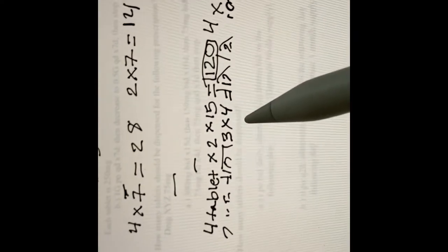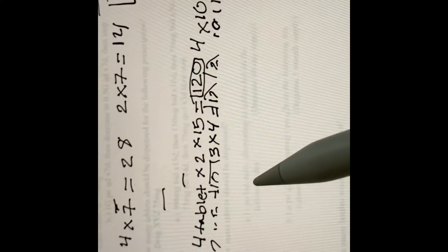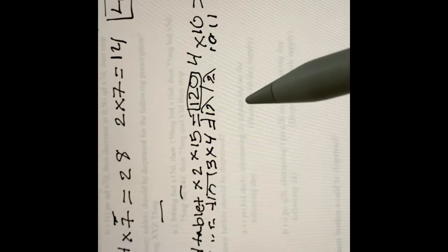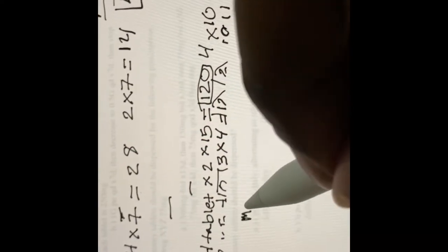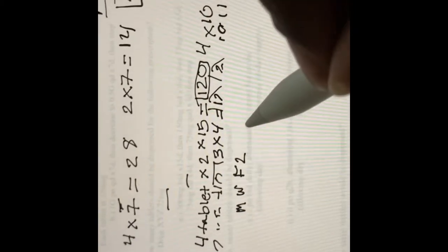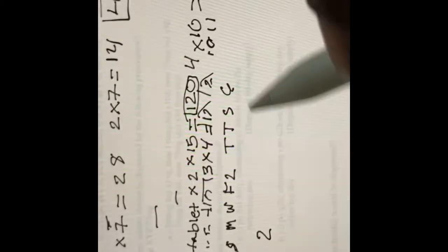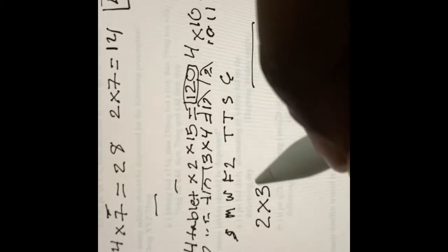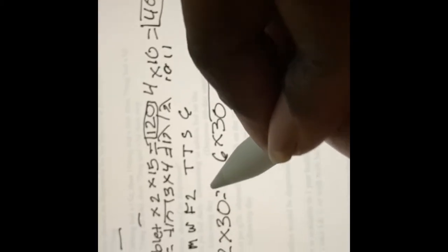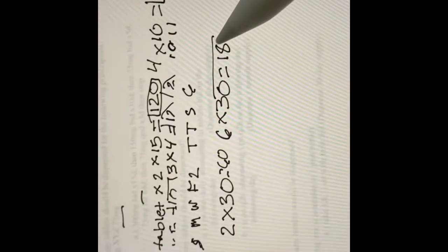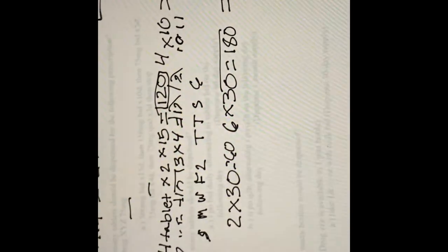How many tablets should be dispensed? You have one tablet by mouth twice a day, alternating two tablets twice a day on the following day. So on Monday, Wednesday, Friday you take two — that's six tablets on those days — and on the alternating days you take one, which is two tablets. It's a 60-day supply, so two times 30 equals 60, and six times 30 equals 180. The answer is 240 tablets.